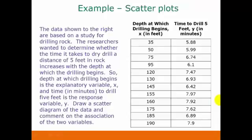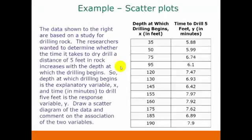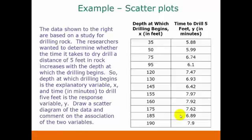Let's look at an example of scatterplots. The data shown in this table is based on a study for drilling rock. The researchers wanted to determine whether the time it takes to dry drill a distance of 5 feet in rock increases with the depth at which the drilling begins. Depth at which drilling begins is the explanatory variable, x, and the time in minutes to drill 5 feet is the response variable, y. We're going to draw a scatter diagram of the data, and then comment on the association between the two variables.